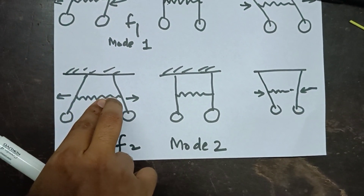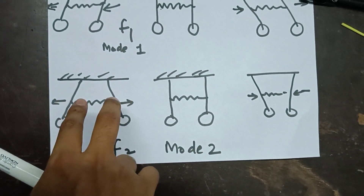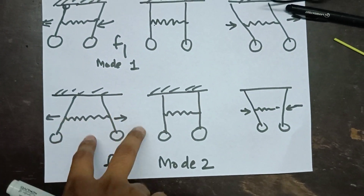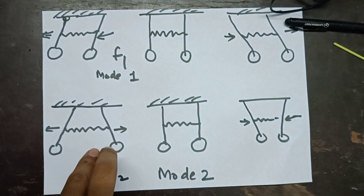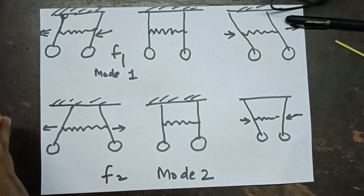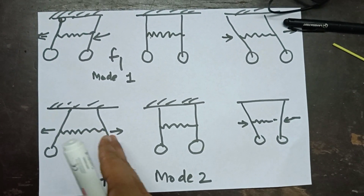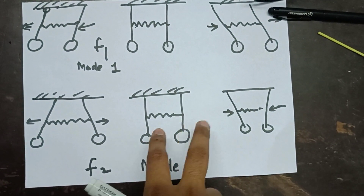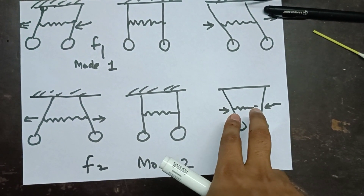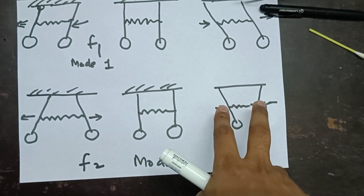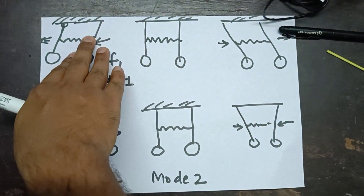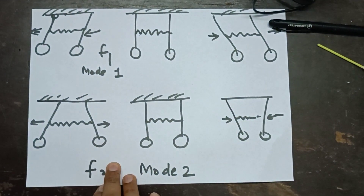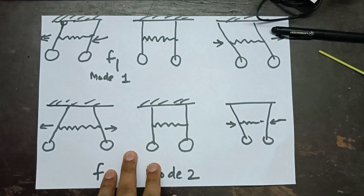Mode two is when the pendulums are moving in opposite directions — they are 180 degrees out of phase, whereas in mode one they are at 0 degree phase. So this one is moving in this direction and this one is moving in the opposite direction, then they come back to neutral position and then get compressed. Mode one has frequency f1 and mode two has frequency f2.